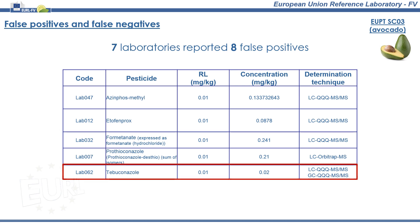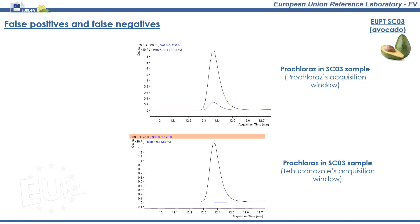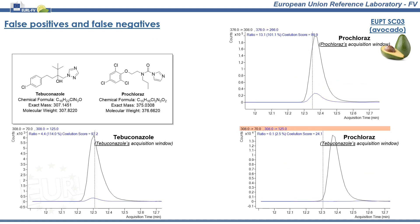Lastly, let's take a look at another false positive reported by a participant, tebuconazole, which was not present in the test item. As in the case of fosmet, again, there is a pesticide which is present in the EUPT sample with a mass transition in common with tebuconazole: prochloraz. In this case, there are less similarities between both chemical structures. However, it is possible that a prochloraz fragment has mass transitions in common with tebuconazole, at least one. Although the precursor ions in each case do not match — 308 for tebuconazole and 376 for prochloraz — at least one prochloraz fragment may appear in tebuconazole's acquisition window and thus give rise to false positive reports.